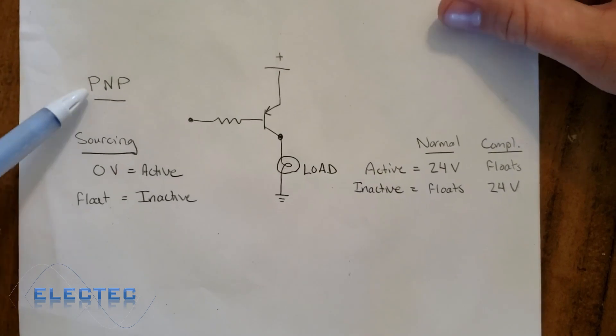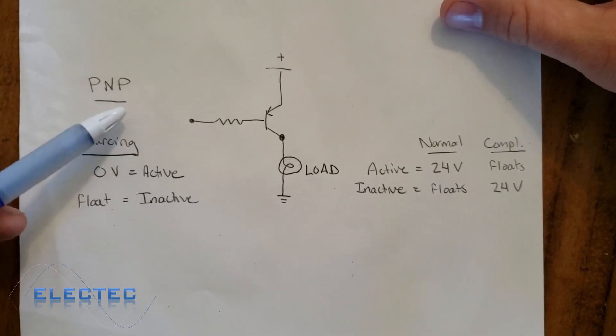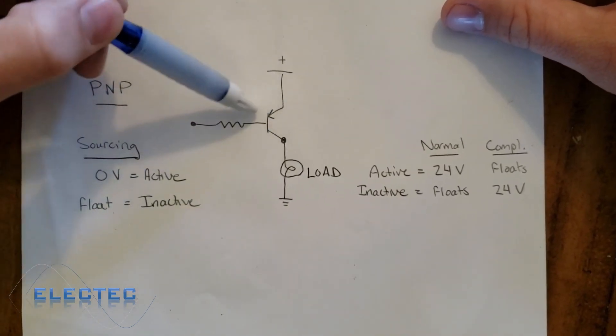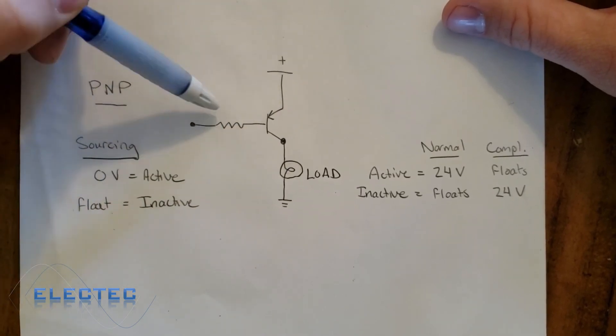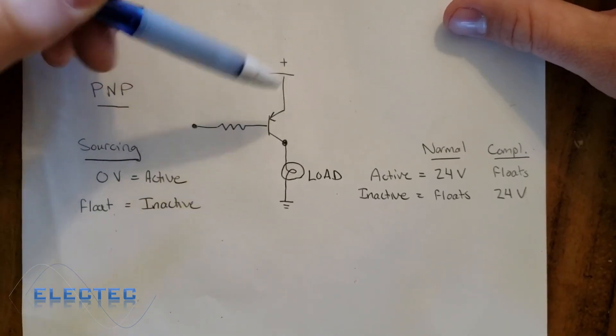Here we go with this PNP sensor as a sourcing sensor. What that means is that the PNP sources the positive voltage. We have to supply a negative voltage to turn on.